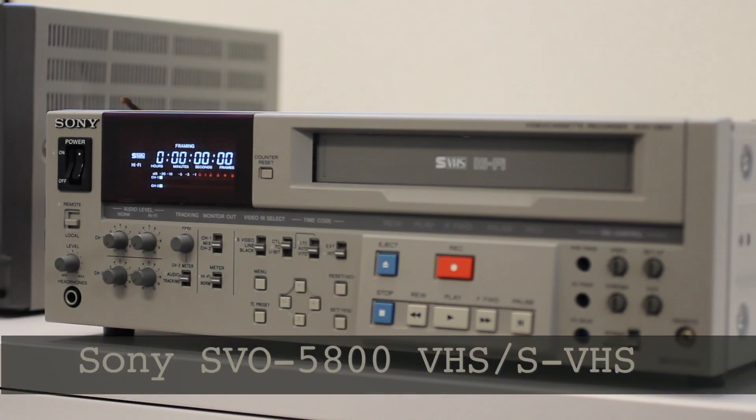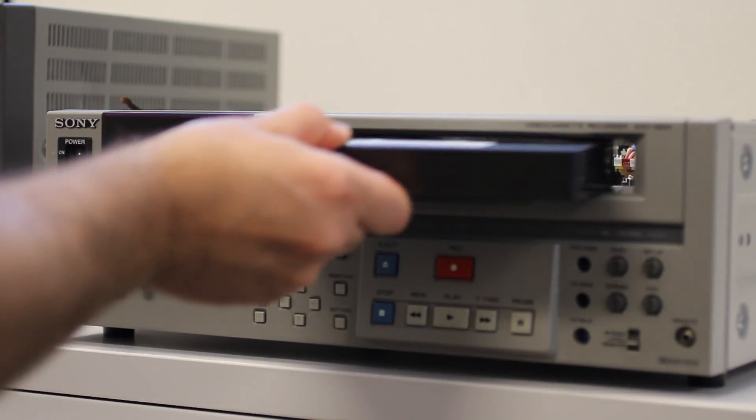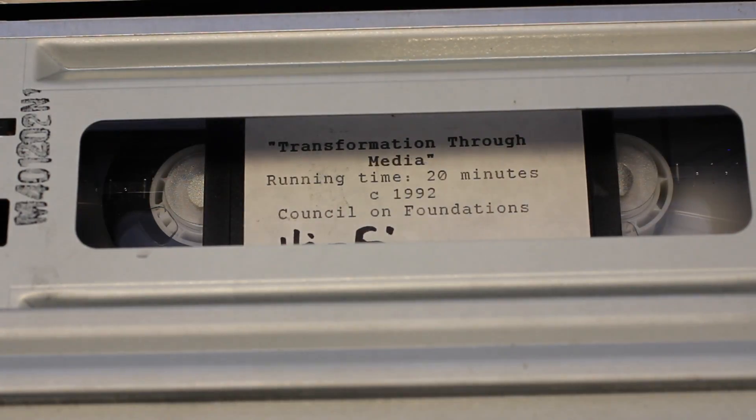This is the Sony SVO-5800 VHS machine. Here I am inserting a cassette into the cassette compartment which activates a switch and the tape is pulled into the machine.